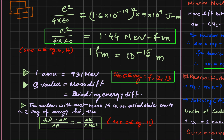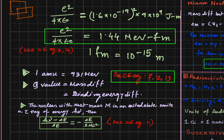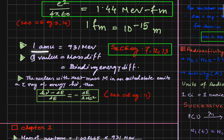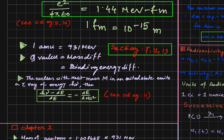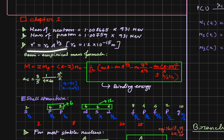Firstly, I remember the value of e² by 4πε₀ which is 1.44 MeV femtometer. 1 femtometer is 10 to the power minus 15 meter. Now 1 AMU is 931 MeV, and the meaning of Q value is the mass difference between the parent and the daughter nucleus, which is the same as the binding energy difference between parent and daughter nucleus. The mass of neutron, mass of proton, and R is equal to R₀ × A^(1/3), where R₀ is 1.2 × 10⁻¹⁵ meter.